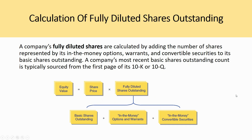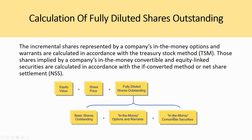A company's fully diluted shares are calculated by adding the shares represented by its in-the-money options, warrants, and convertible securities to its basic shares outstanding. The basic shares outstanding count is typically sourced from the first page of the 10-K or 10-Q. The incremental shares from in-the-money options and warrants are calculated using the Treasury Stock Method (TSM). Shares from in-the-money convertible and equity-linked securities are calculated using either the if-converted method or the net share settlement (NSS) method.